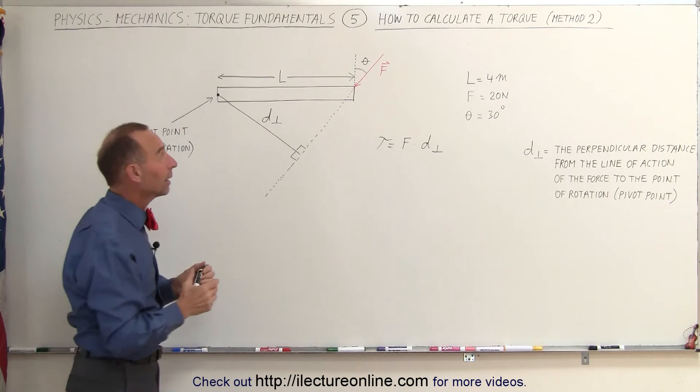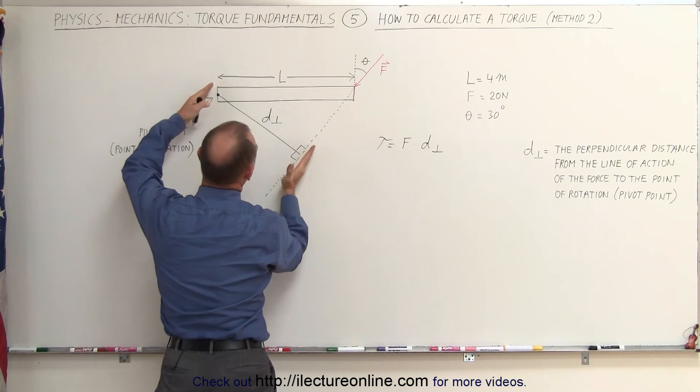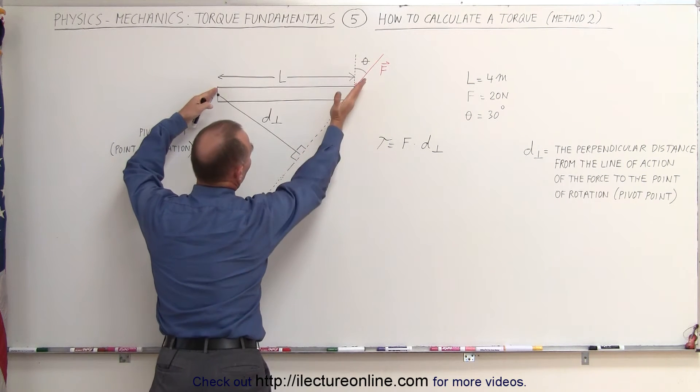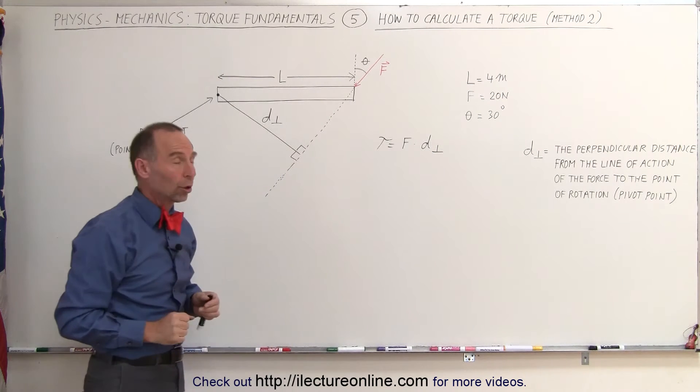If we now multiply the magnitude of the force times this length right here, this is the perpendicular distance from the line of action of the force to the pivot point, then we get the torque.